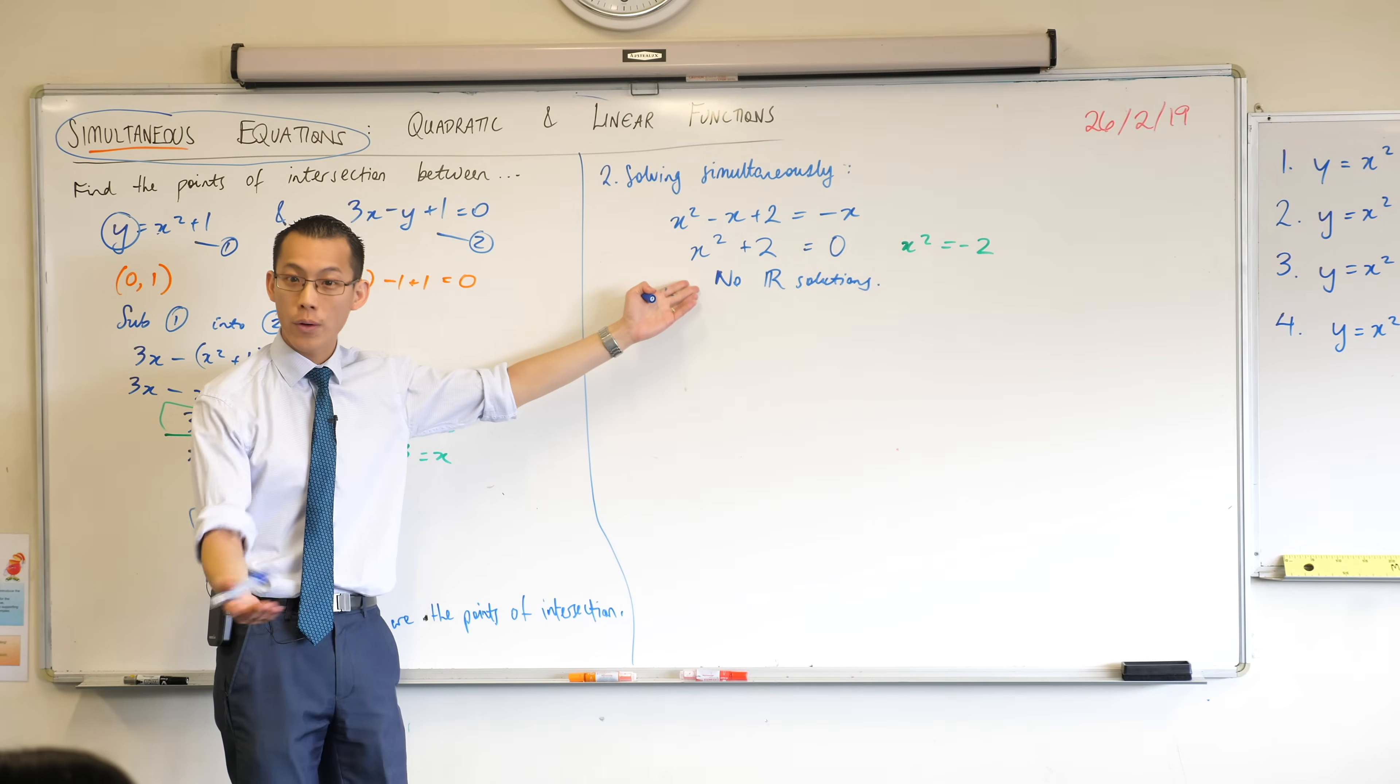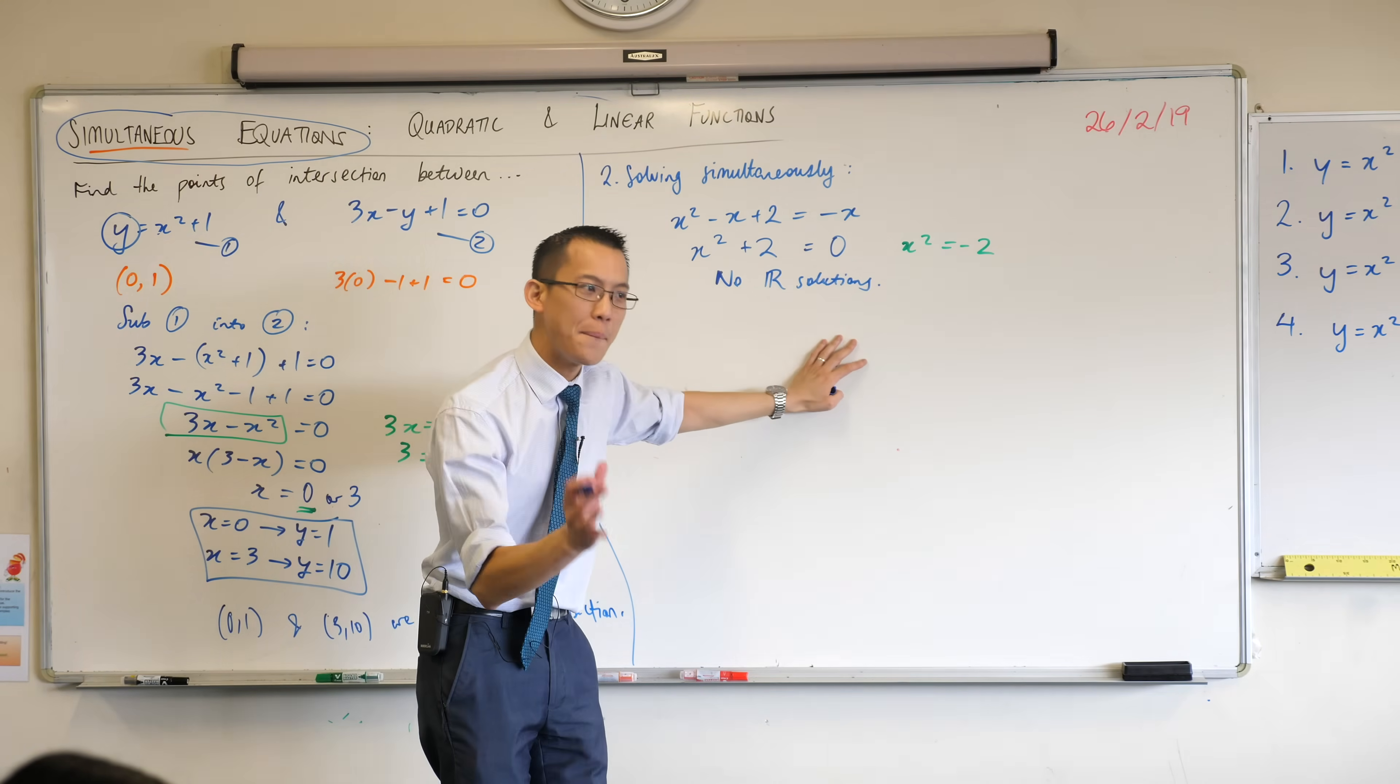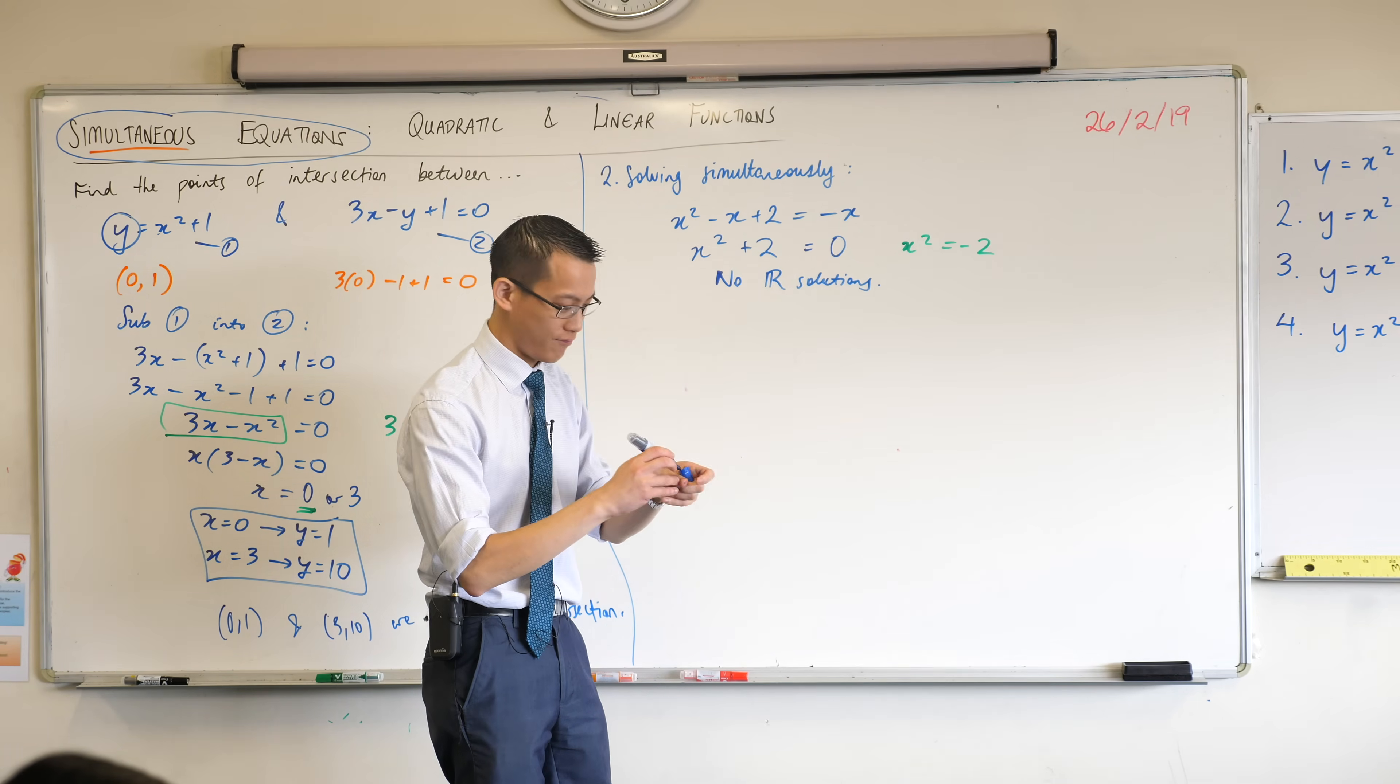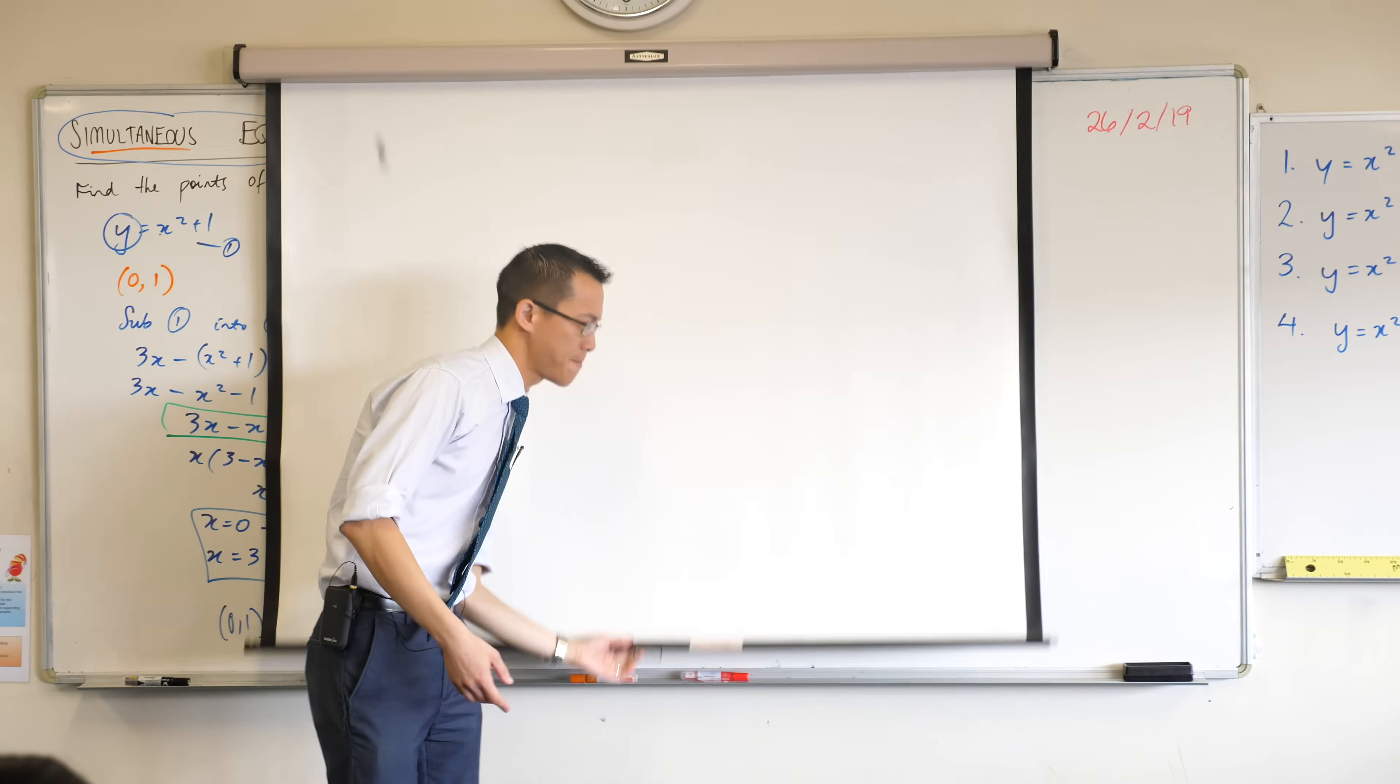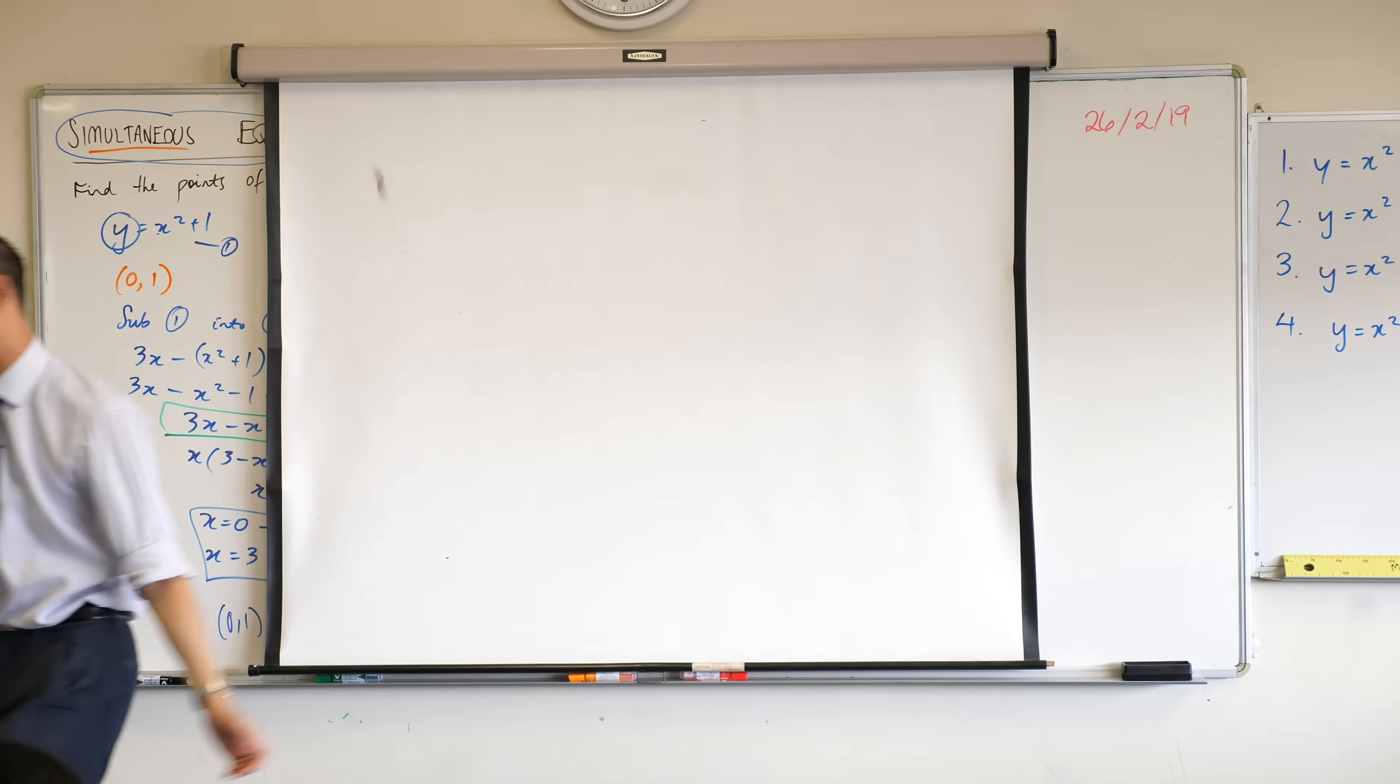Now, I'm going to ask you the same question here. You know how we got to the end, we got some values for x and we're like, cool, are we done? And you told me no. Well here, I've found there are no values for x, are we done? The answer is no, I have not answered the question. The question says, find the points of intersection. If there are no real solutions, what does that mean about the points of intersection?